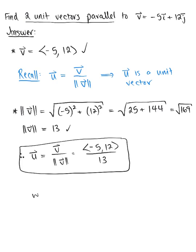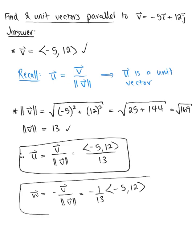Another unit vector parallel to v would be the negative version: -v/||v||. Pulling the scalar multiple to the front, this gives us -1/13 times the vector <-5, 12>. Both of these new vectors are unit vectors and are parallel to the given vector v.